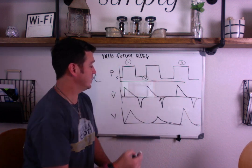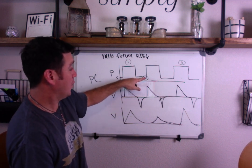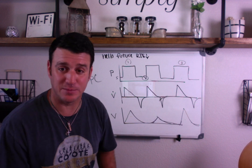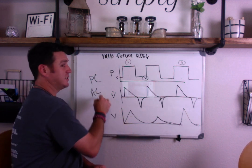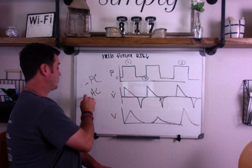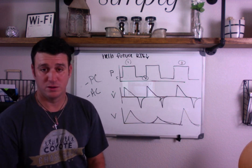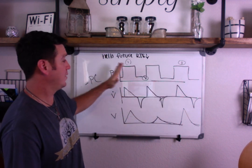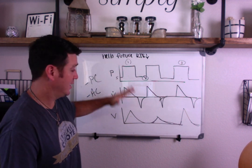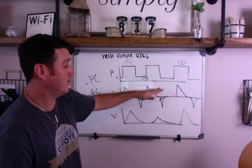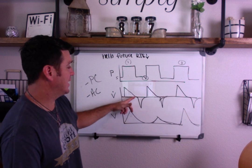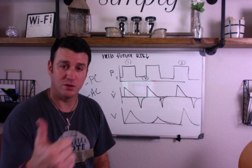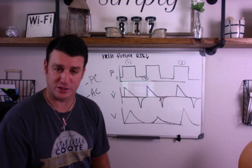Because the patient initiated one of these breaths, the pressure rose and was held for the set I-time — that tells you it's an assisted breath. This is assist control. This is pressure control assist control, because all of these breaths are being controlled by the machine in pressure control form. Your tidal volumes are the only thing that vary. Your flow will vary as compliance changes, but remember a decelerating flow pattern can go with volume control or pressure control. In this case, when you have a square waveform, you know you're looking at pressure control.